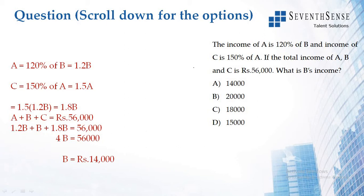So A is equal to 120% of B, that is equal to 1.2B, and C is equal to 150% of A, that is equal to 1.5A. When you substitute the value of A — which is 1.2B — into the value of C, you get C equal to 1.8B.